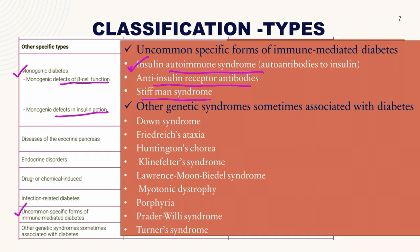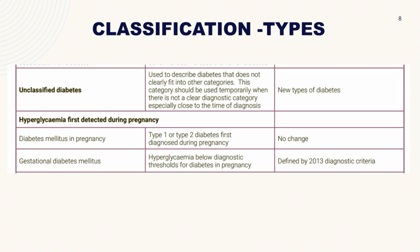Other genetic syndromes sometimes associated with diabetes include Down syndrome, Friedreich's ataxia, Huntington's chorea, Klinefelter syndrome, Laurence-Moon-Biedl syndrome, myotonic dystrophy, porphyria, Prader-Willi syndrome, and Turner syndrome. Towards the end we have unclassified diabetes, and lastly hyperglycemia first detected during pregnancy — diabetes mellitus in pregnancy or gestational diabetes mellitus, where type 1 and type 2 diabetes may be first diagnosed during pregnancy.